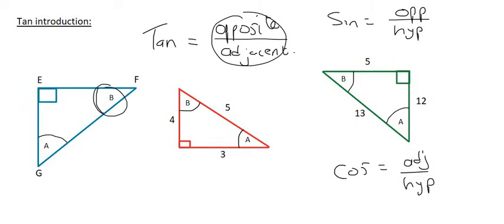So the tan of B, well, that's going to be the opposite. So tan of B is going to be the opposite, which is EG, over the adjacent, which is EF.